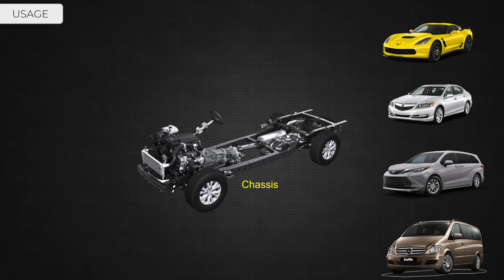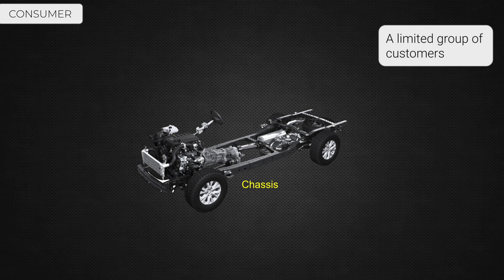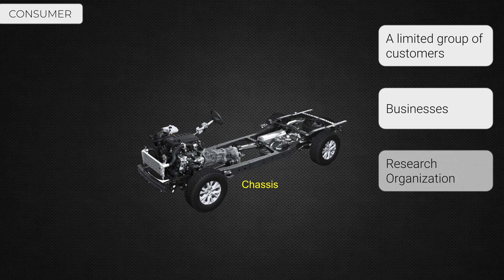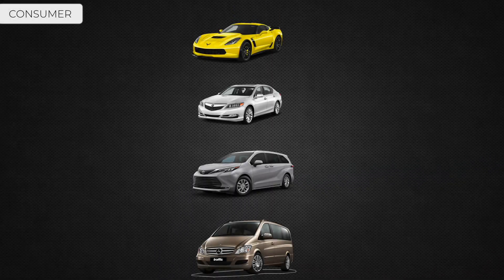So multiple products can be created from one single piece of technology. If we focus on the consumers for the chassis at the technology level, this could be a limited group of customers — businesses who want to use the chassis to build a specific purpose vehicle such as a sedan or sports car, research organizations using it as a tool for various research, or special interest groups. This gives you a better understanding of where the chassis can be consumed and the scope and scale of its usage.